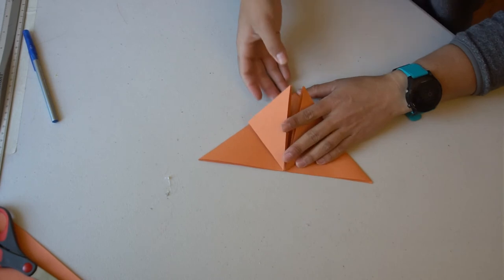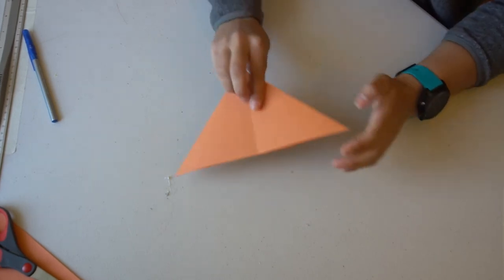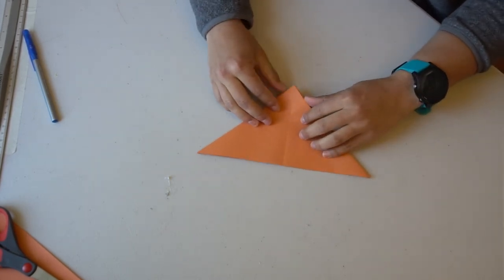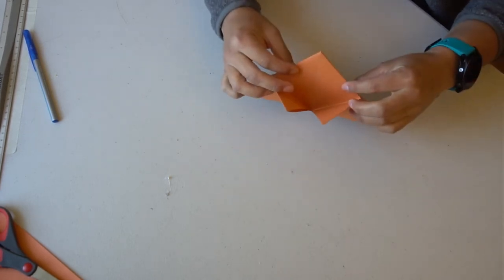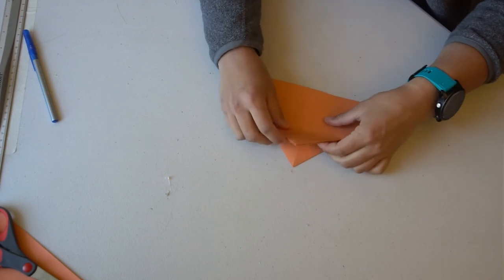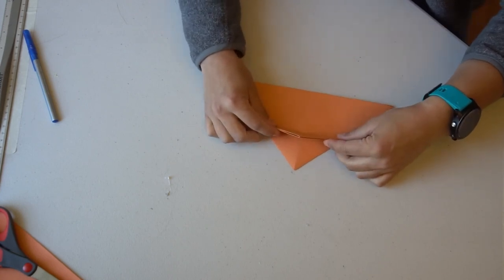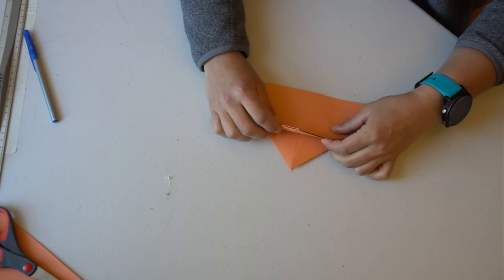Next, flip your piece of paper over and take the top half of the top point of the triangle and fold it down so that it goes past the bottom edge of your triangle. This is going to make a fold that looks a little bit funny, but don't worry too much about that.